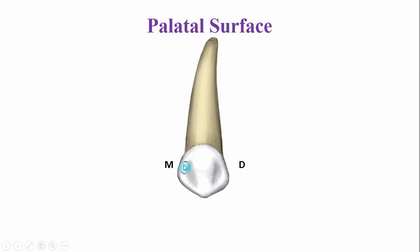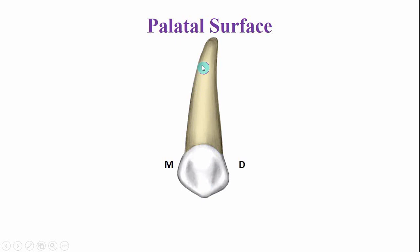There are marginal ridges — this is the mesial marginal ridge and this is the distal marginal ridge. These ridges are very low and indistinct; they are not very prominent compared to the marginal ridges of the maxillary deciduous central incisor or lateral incisor. The root is long compared to the height of the crown; in fact, the root of the maxillary deciduous canine is the longest among all the deciduous teeth.